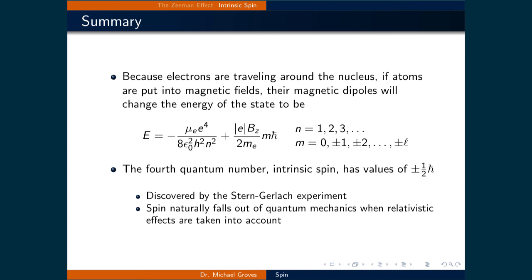In this lecture, we discuss the Zeeman effect and intrinsic spin. In relation to the Zeeman effect, since electrons are traveling around the nucleus, if atoms are put into a magnetic field, their magnetic dipoles will change the energy of the state to include a term that depends on the m quantum number.